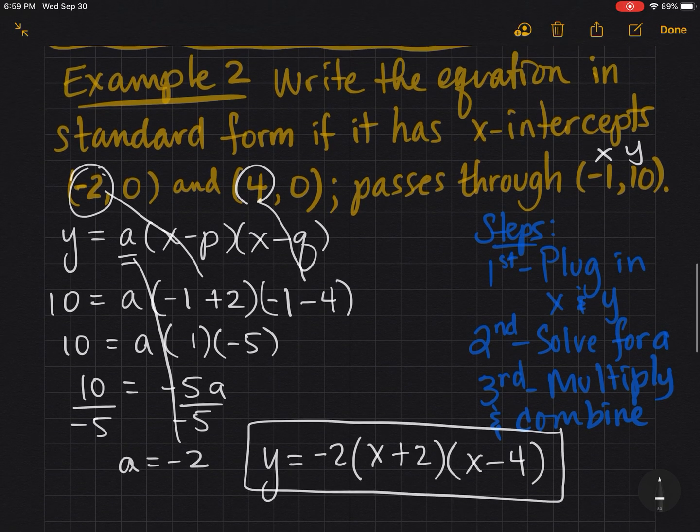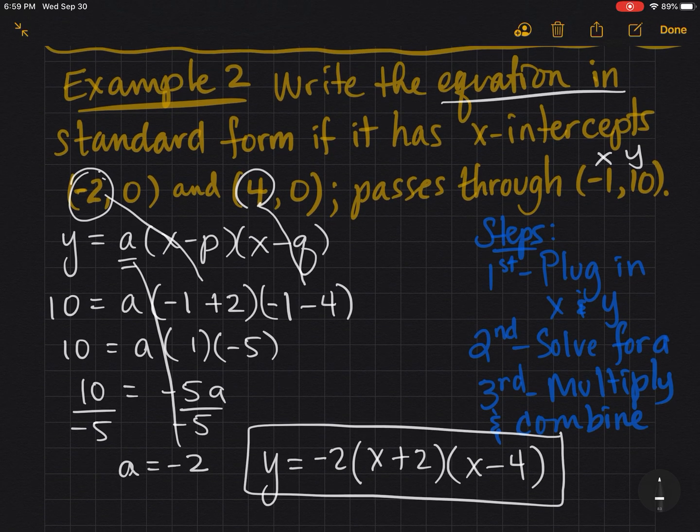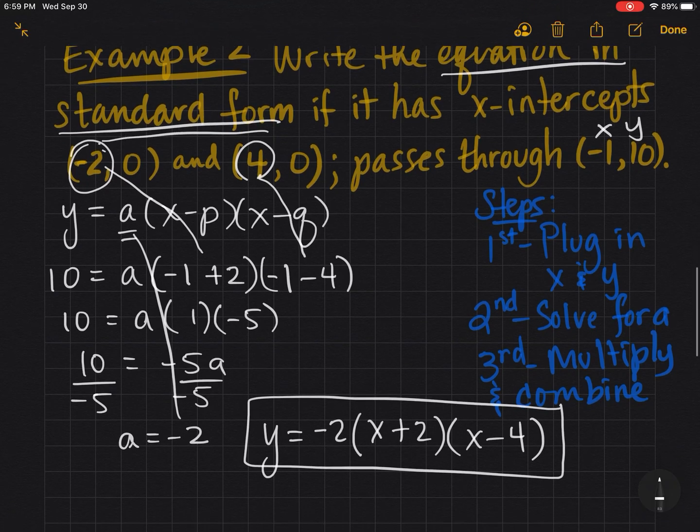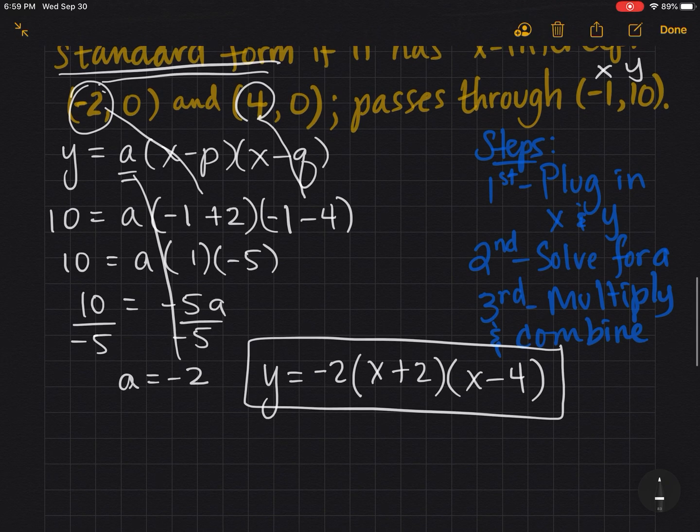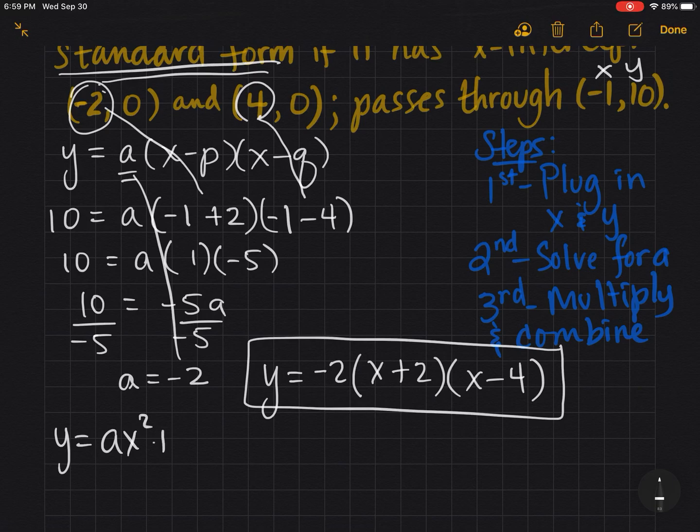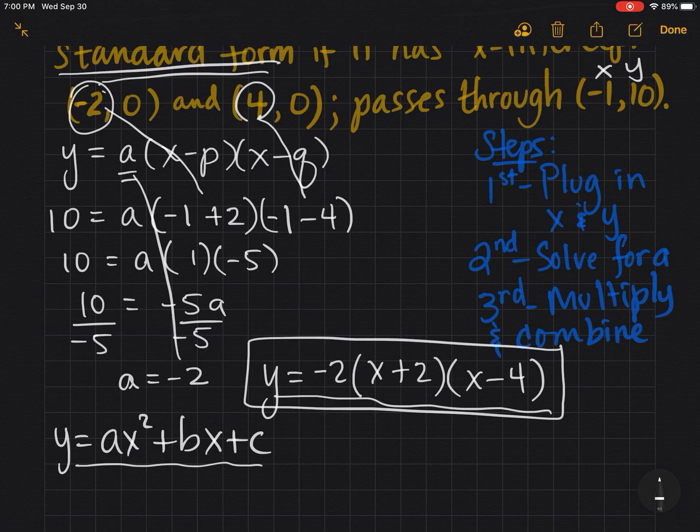We're not done. This asks for us to write the equation in standard form, so we need to think back. Standard form is the one that says y = ax² + bx + c. So we need to make this equation look like this. I need to recall how to FOIL.